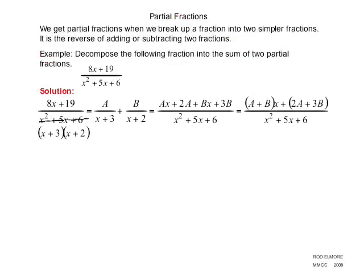Now we first do this by factoring the denominator. And when we factor this denominator, we get x plus 3 times x plus 2. So then we break the original fraction up into two fractions: a over x plus 3 plus b over x plus 2. So we take our two factors of the original denominator, and we separate them and put them into two separate fractions.